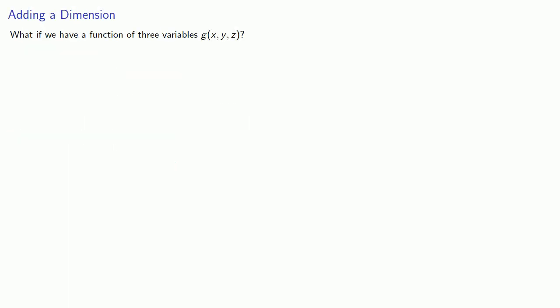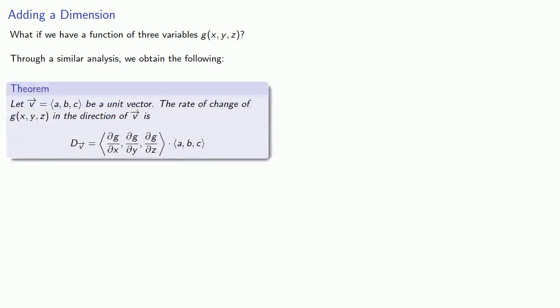What if we have a function of three variables, g of x, y, and z? Through a similar analysis, we obtain the following: if v is a unit vector, the rate of change of a function in the direction of v is our directional derivative, and is the dot product of the vector whose components are the partials with respect to x, y, and z with our unit vector.